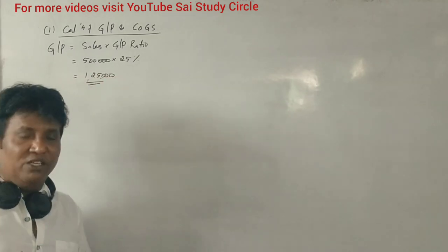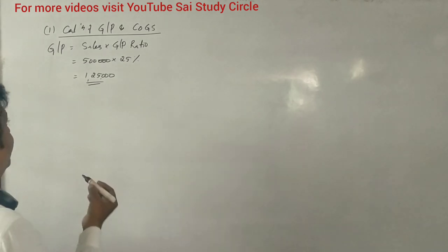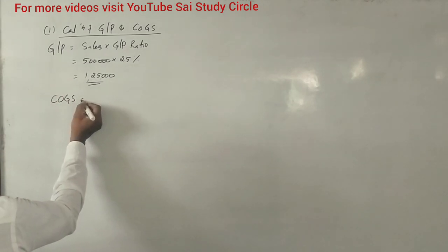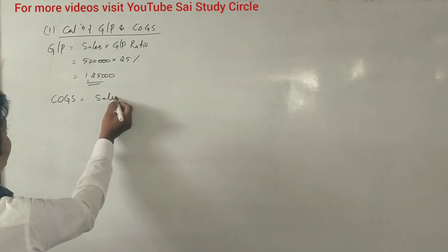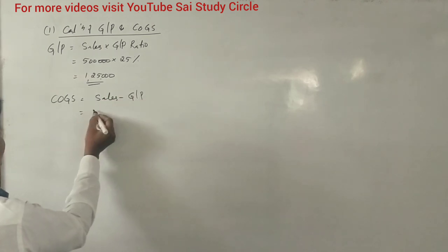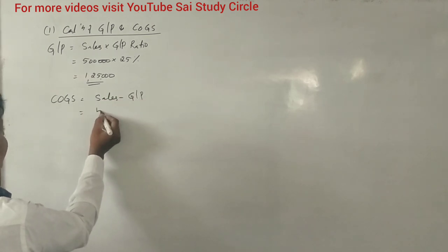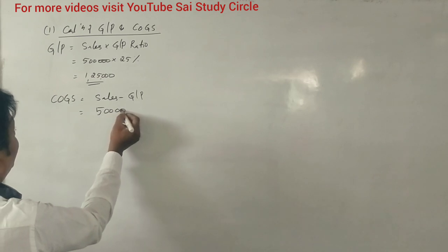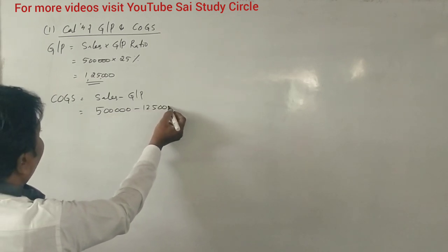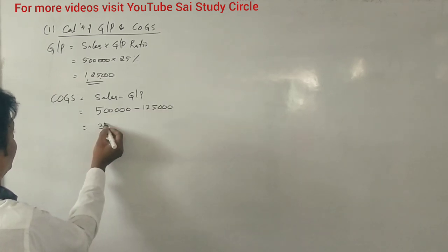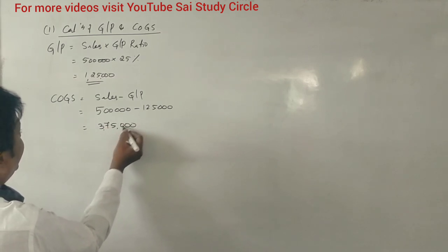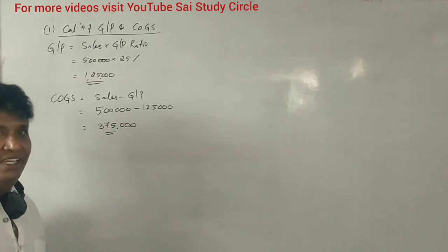Cost of goods sold is sales minus gross profit. Sales is 5 lakhs, gross profit is 1 lakh 25 thousand, so cost of goods sold is 3 lakh 75 thousand.